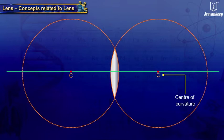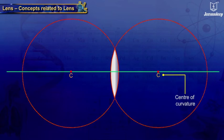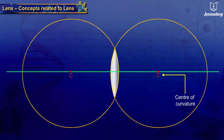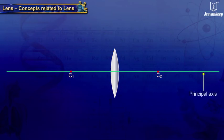Concepts related to a lens: The center of curvature, represented by C, is the center of the imaginary sphere which forms the given lens. Each lens has two centers of curvature, C1 and C2.